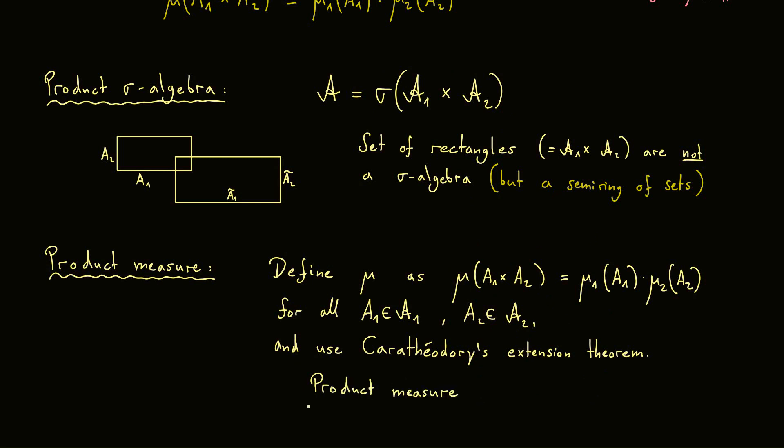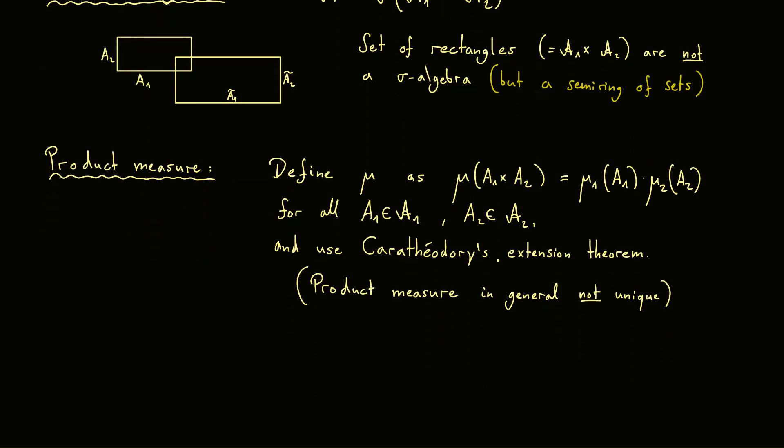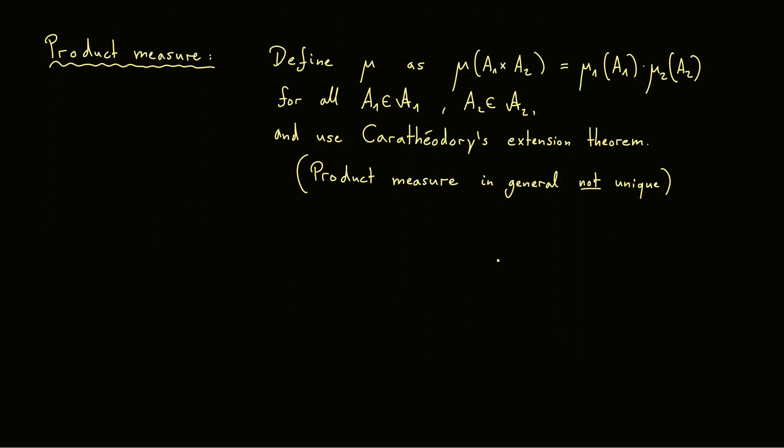However, we also learned in the video about Carathéodory's extension theorem that this definition is not unique. This means that we could in general have multiple product measures that fulfill this rule for the rectangles. Well now I want to close this video with the case where we have in fact uniqueness. So let's write that down as a proposition.